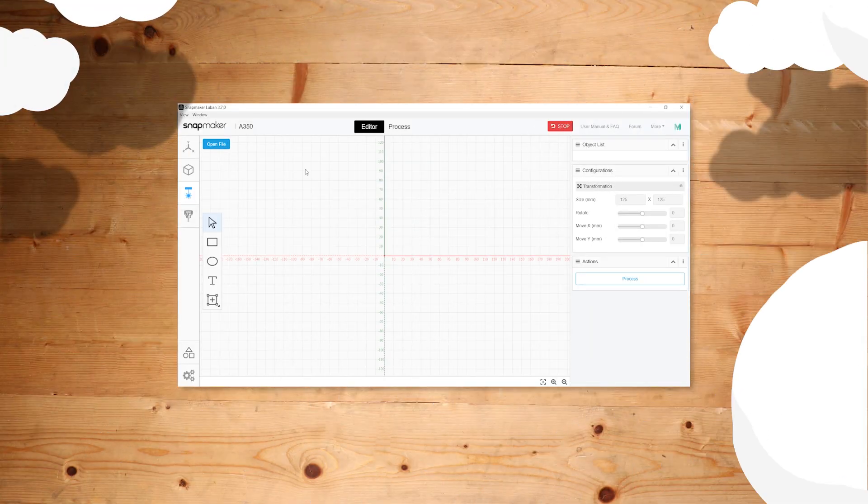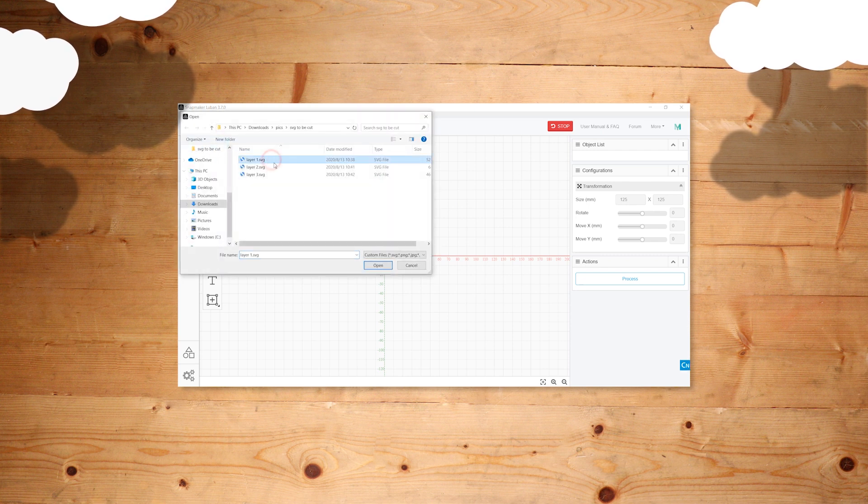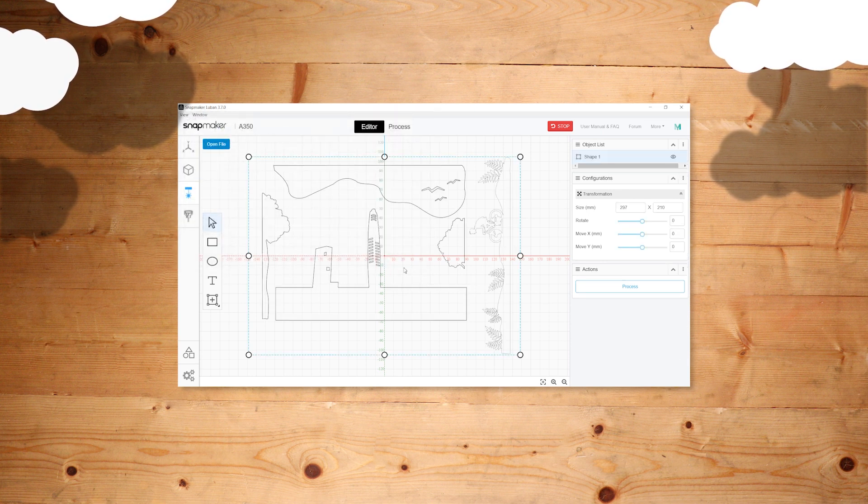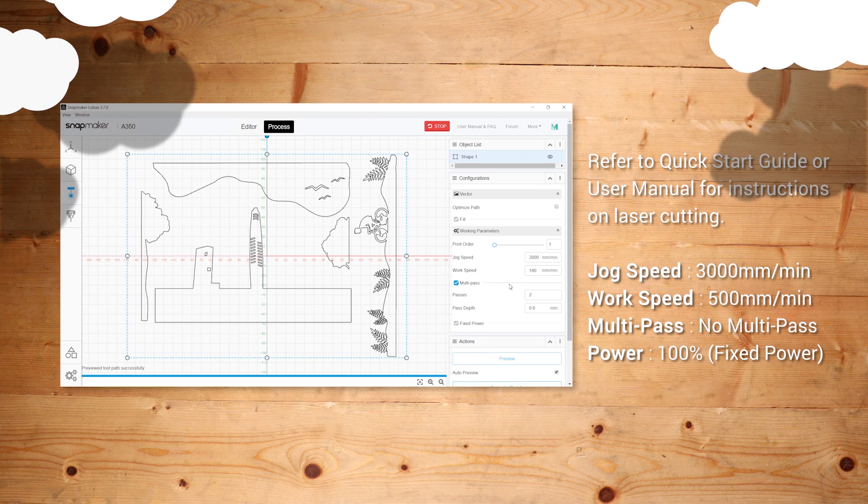Now we can import the SVG files into Snapmaker Luban and move on to the laser cutting part. It's recommended to set the laser parameters as follows.